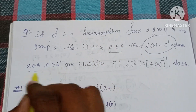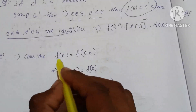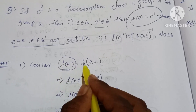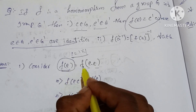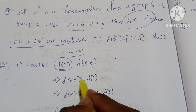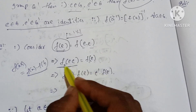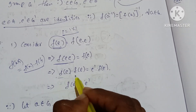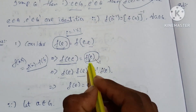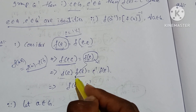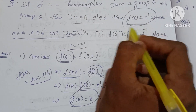For the first condition, since e·e = e in G, we have f(e) = f(e·e). By the homomorphism condition, f(e·e) = f(e)·f(e). So f(e) = f(e)·f(e). By cancellation, f(e) = e'. Therefore f(e) = e'.